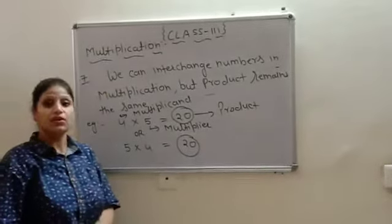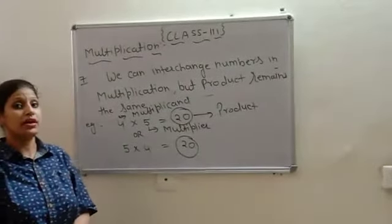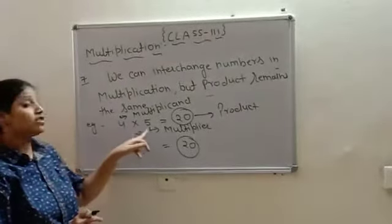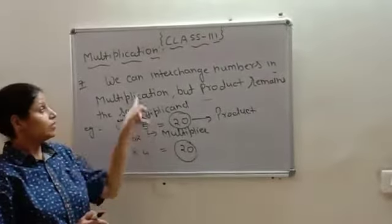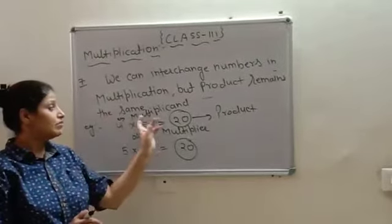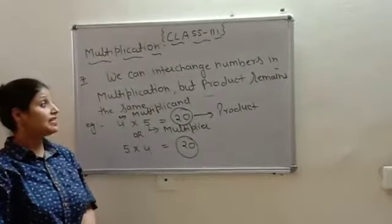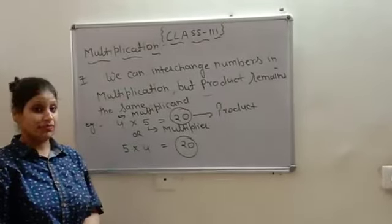So, children, these are the rules which are very, very important to learn so that you will identify that what number is called what. So, you need to learn basic terms of these rules. It is very, very important. Now, we will see how to multiply. Alright?